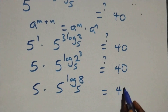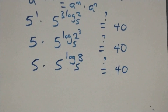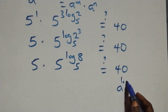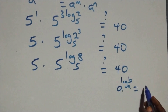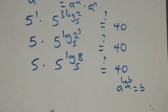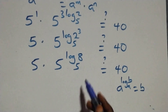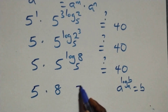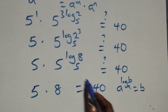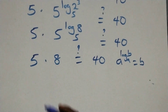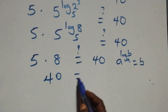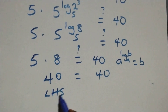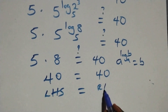Applying the identity a raised to power log b to base a equals b, where a equals five and b equals eight, five raised to power log eight base five equals eight. So we have five times eight equals forty, which confirms the left-hand side equals the right-hand side.